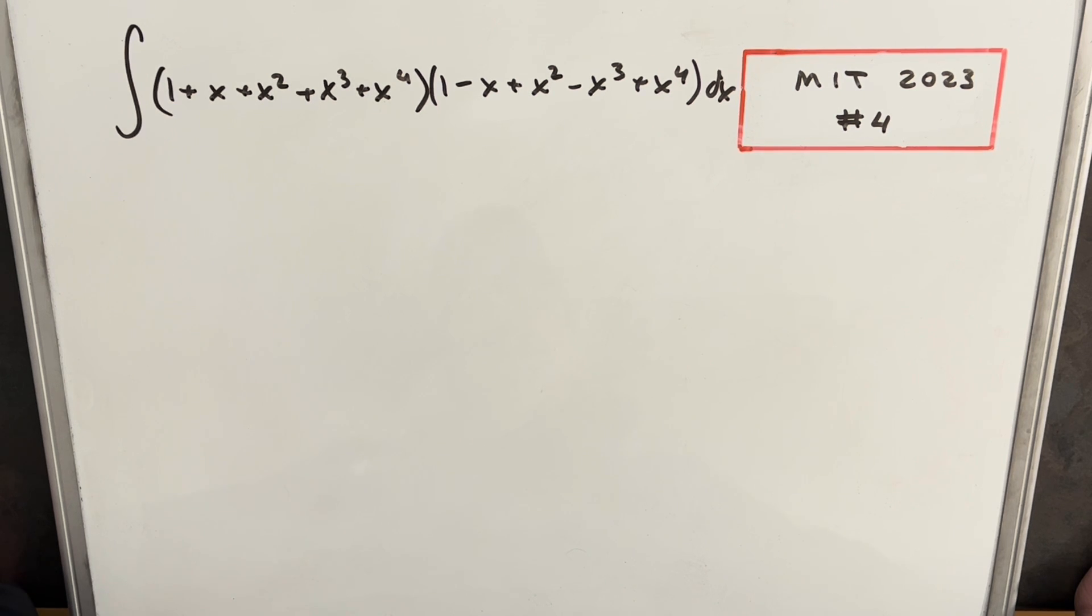We have the integral of (1 + x + x² + x³ + x⁴) times (1 - x + x² - x³ + x⁴) dx.